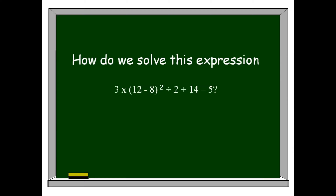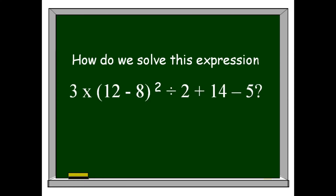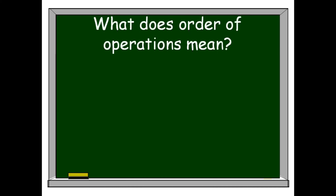How do we solve this expression: 3 times the quantity of 12 minus 8, squared, divided by 2, plus 14 minus 5? I understand that you have lots of confusion since this expression involves parenthesis, exponents, and the four mathematical operations — addition, subtraction, multiplication, and division. Don't worry, because we're going to step by step solve this expression. First, we're going to discuss the order of operations.